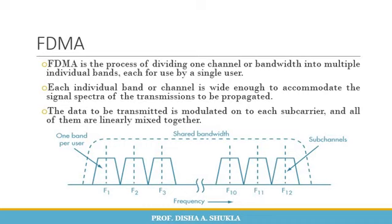Different data or information sources are each assigned a different light frequency for transmission. Light is generally referred to by its wavelength rather than frequency. As a result, the fiber optic FDMA is called Wavelength Division Multiplexing, or WDM.